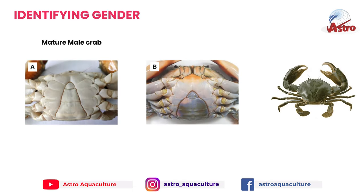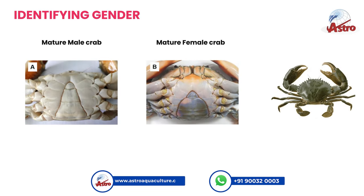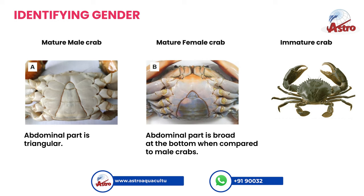Identifying Gender: Abdomen of immature, mature female, and male Scylla serata. The mature male crab's abdominal part is triangular, while the mature female crab's abdominal part is broad at the bottom when compared to male crabs.